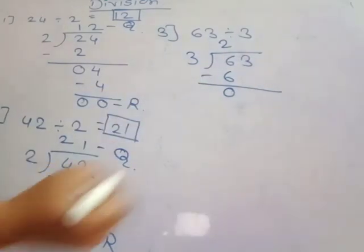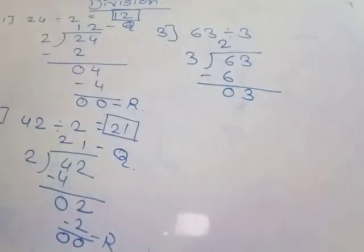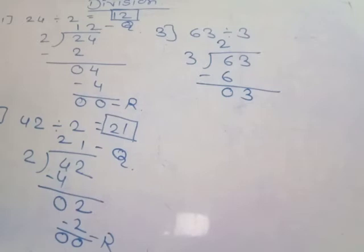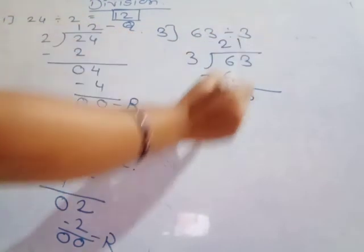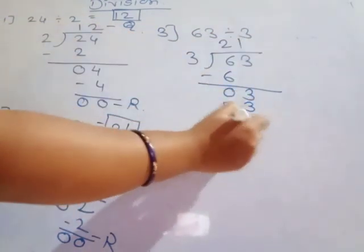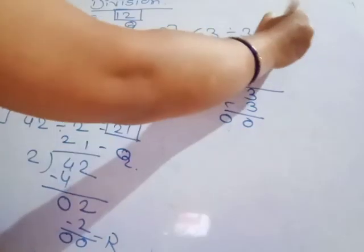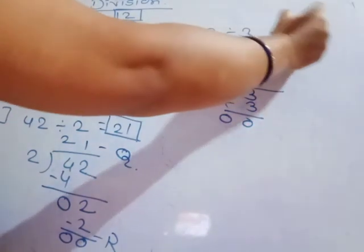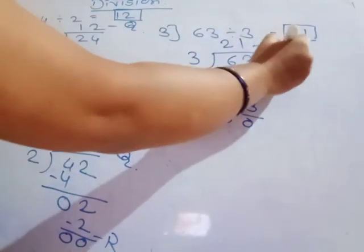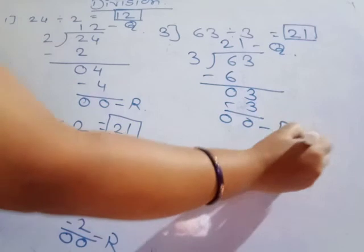Take the unit's place number 3. Again, in the three times table, 3 is there: three ones are three. Write 1 here. So 63 divided by 3 is equal to 21. The quotient is 21 and the remainder is zero.